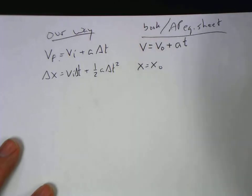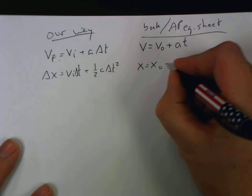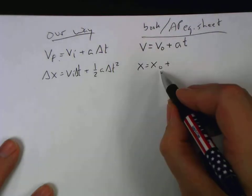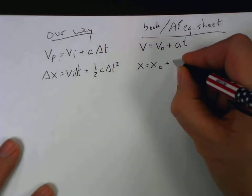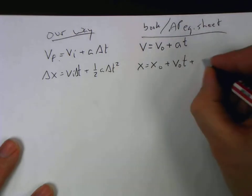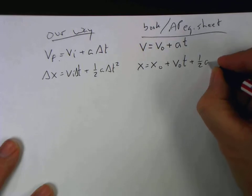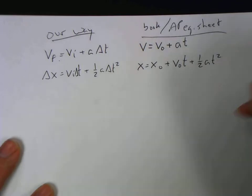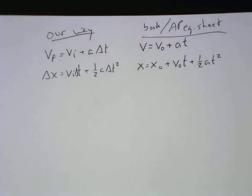X sub zero is referred to as x naught. The term naught meaning zero is a British thing and I don't know, it caught on in physics. So they write it as x equals x naught plus the v naught multiplied by t plus one half the acceleration times t squared. That doesn't look very much different. You should be able to jump back and forth between these things pretty easily.